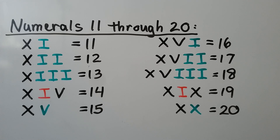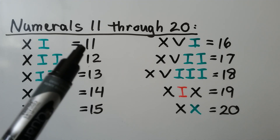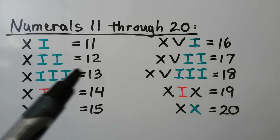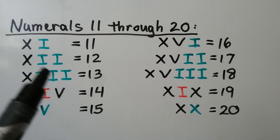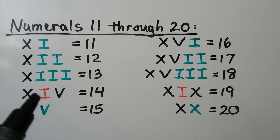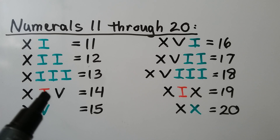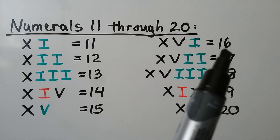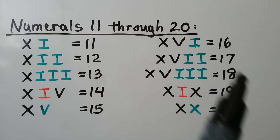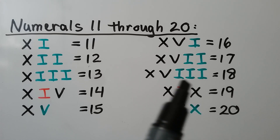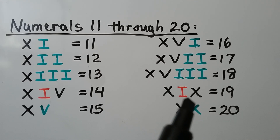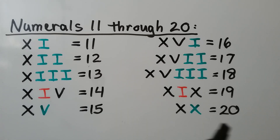For numerals 11 through 20: XI is 10 plus 1 equals 11 — we add because values are decreasing going right. XII is 10 plus 1 plus 1, which is 12. XIII is 10 plus three 1s, which is 13. But we can't have more than 3 I's, so for 14 we use our 10 and then the subtraction pair IV — 5 minus 1 — making XIV. Then XV is 10 plus 5 for 15; XVI is 16; XVII is 17; XVIII is 18. But we can't have more than 3 I's together, so for 19 we use X and then IX — 10 minus 1 — making XIX. Then XX, same value so we add, equals 20.